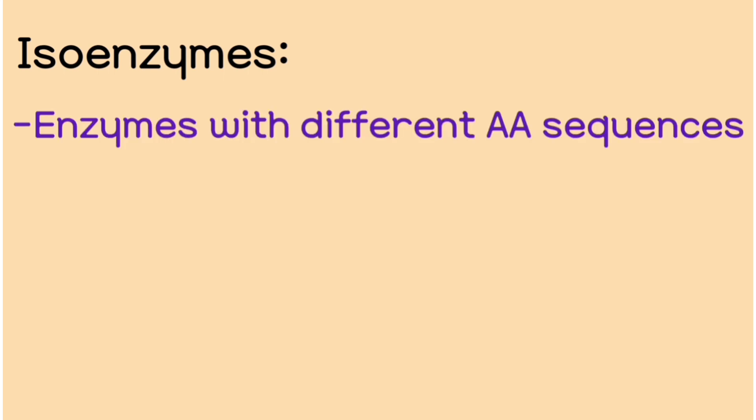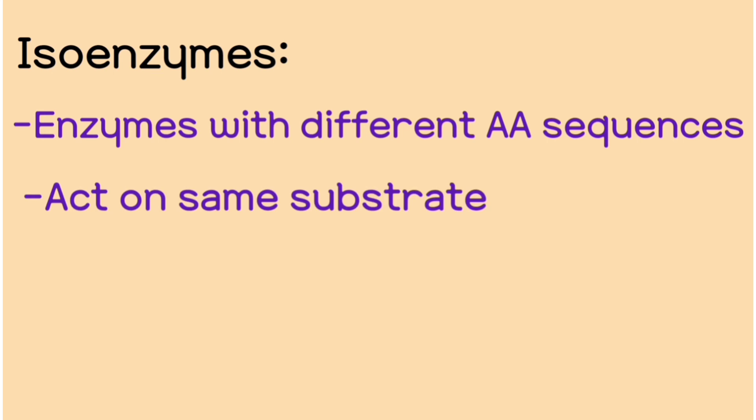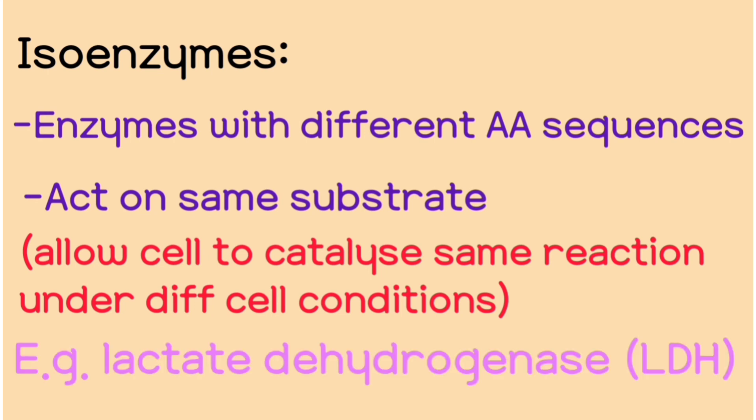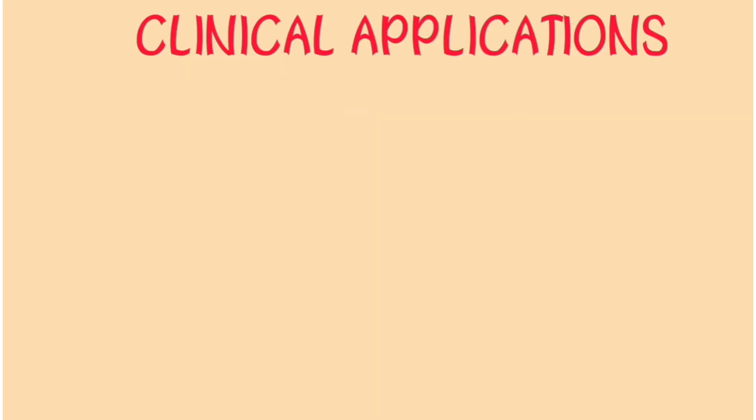Lastly, let's look at isoenzymes. Isoenzymes are enzymes with different amino acid sequences but they act on the same substrates. This allows the cell to catalyze the same reaction under different conditions. An example of an isoenzyme is mammalian lactate dehydrogenase.